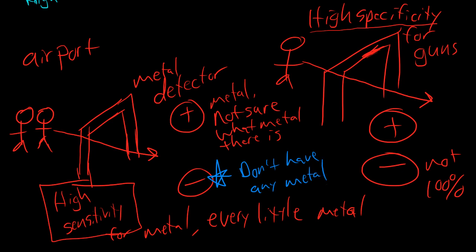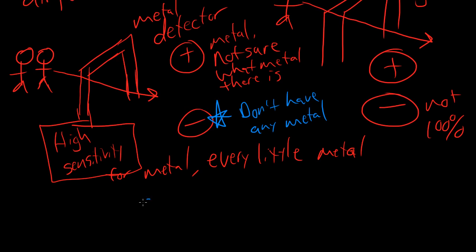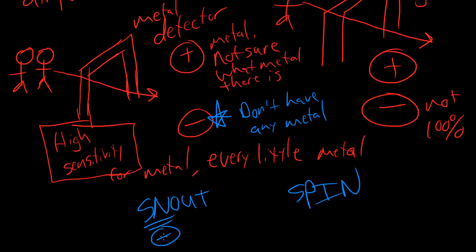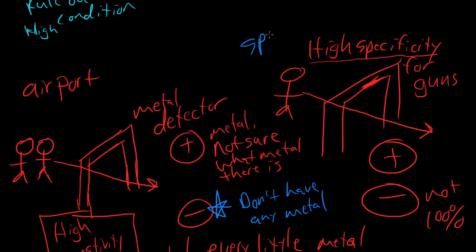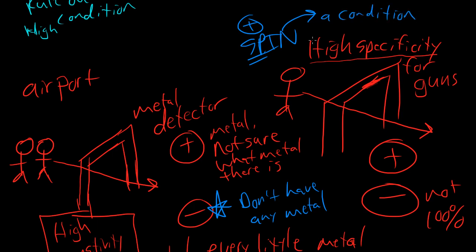So these terms help you remember: SNOUT and SPIN. SNOUT is sensitivity — it has to be a negative result. A test with high sensitivity, if it's negative, helps you rule out the condition. SPIN refers to specificity, and it has to be a positive result — that helps you rule in a condition.